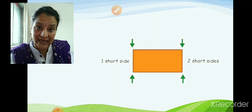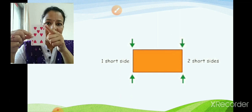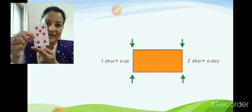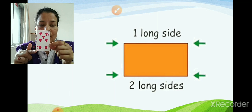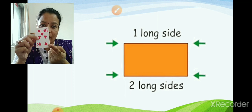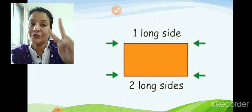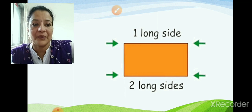Now, for example, your playing card. This side — look here — this side, and this side is short. It is short. And two sides are long. This is long, this is short. So two sides are short and two sides are long.